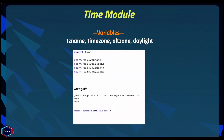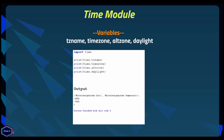Now let's look at the variables provided by the time module. The tzname variable is a tuple containing the name of the local time zone and the name of the local daylight saving time zone if defined. In my example, my local time zone is Central European Time and the daylight saving time zone is Central European Summer Time. The timezone variable gives the difference in seconds between UTC and local standard time — for Central European Time, it is -3600, which is 1 hour. The altzone variable returns the difference between UTC and local time inclusive of daylight saving time. The daylight variable is set to a non-zero value if a daylight saving time zone has been defined on your system.